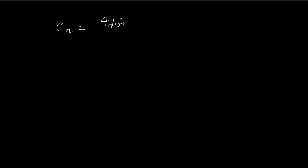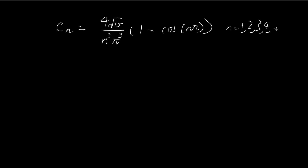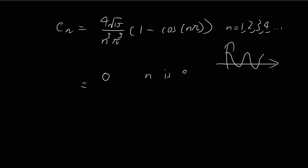We can do a further simplification by observing how the cosine nπ term changes with n. Recall the cosine function: when n is an even number like 2, 4, 6, 8, cosine 2π, cosine 4π, cosine 6π are all equal to 1. So you get 1 minus 1, which is 0. So cn equals 0 when n is even. When n is an odd number like 1, 3, 5, 7, cosine π, cosine 3π, cosine 5π are all equal to negative 1. So you have 1 minus negative 1, which is 2. This gives cn equal to 8 times the square root of 15 divided by n cubed divided by π cubed, when n is odd.